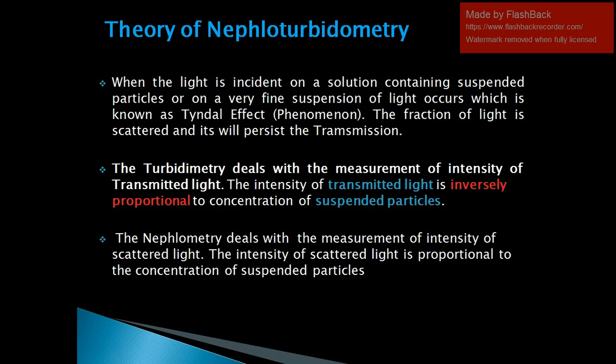Turbidimetry deals with the measurement of transmitted light. The intensity of transmitted light is inversely proportional to the concentration of suspended particles. Turbidimetry measures the turbidity of the solution. If the amount of suspended particle is more, then turbidity will be more. As turbidity is more, absorption of light is more, and therefore the transmission of light is less. That is why the intensity of transmitted light is inversely proportional to the concentration of suspended particles.